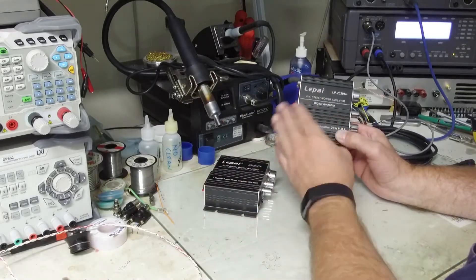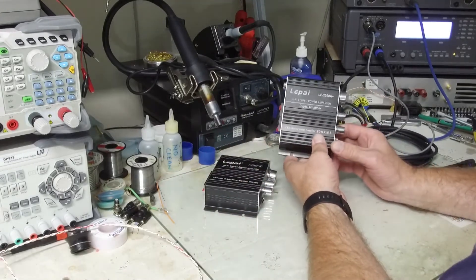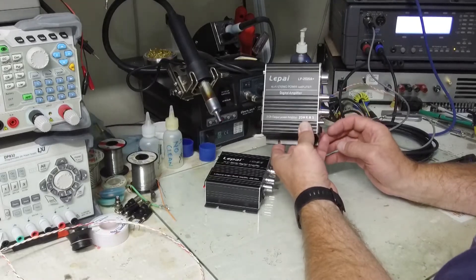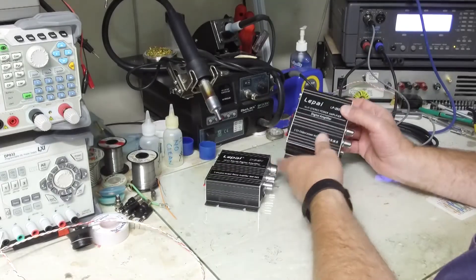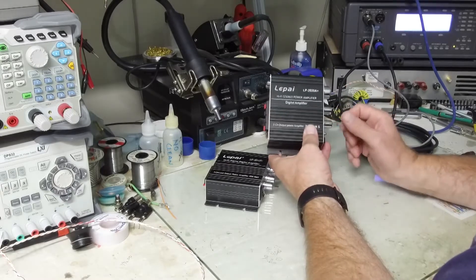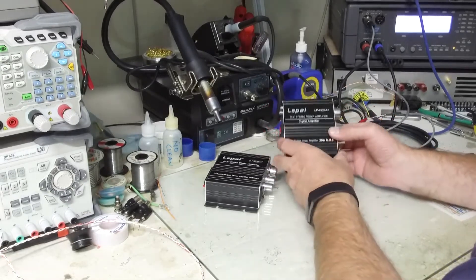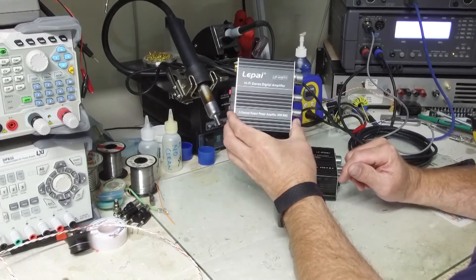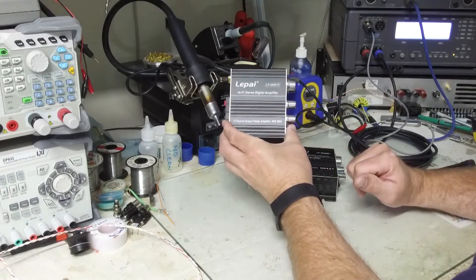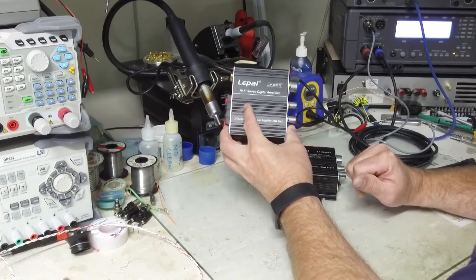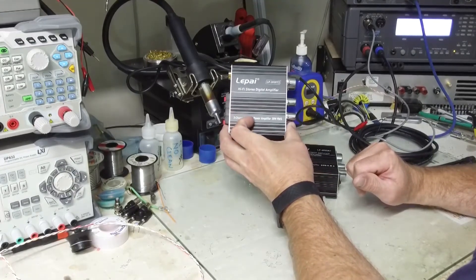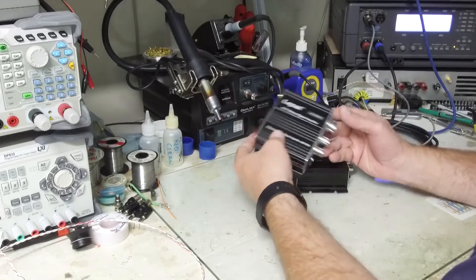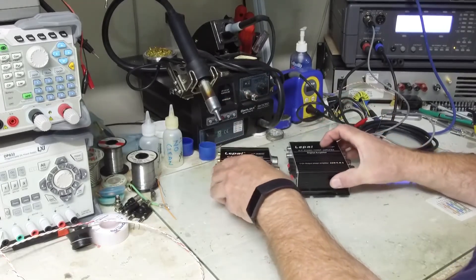The first amplifier I've had for years, and it is based on the TriPath TA2020 chip. It has a real cult following. A lot of people think that it sounds really good. TriPath went out of business and the chips became hard to get, so they replaced the design with this, which looks exactly the same. The chip set inside of this unit is manufactured by Texas Instruments, and it is the TPA3118. These are both rated for 20 watts.